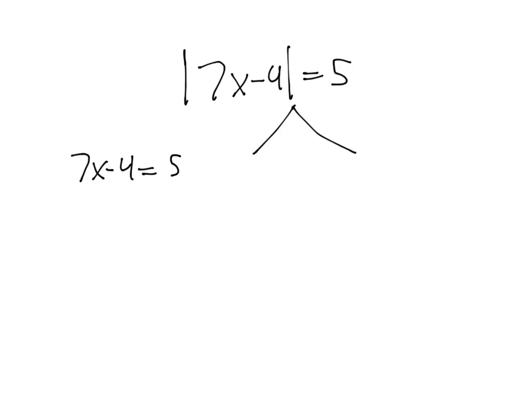The second equation, we remove the absolute value symbol, but instead of having this equal positive 5, we have this equal negative 5.